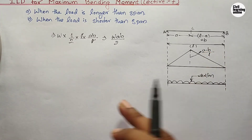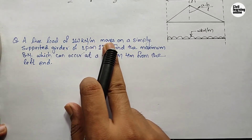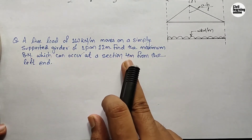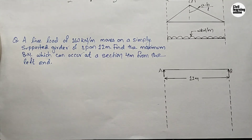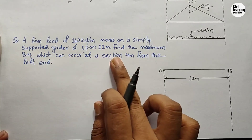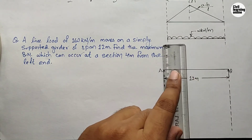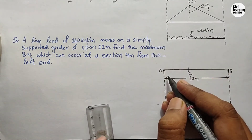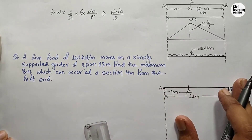Now let's look at an example for the load-longer-than-span case. The question: a live load of 160 kN/m moves on a simply supported girder of span 12 m; find the maximum bending moment at a section 4 m from the left end. I've drawn girder AB with span 12 m. Section C is 4 m from the left support A, so a = 4 m.